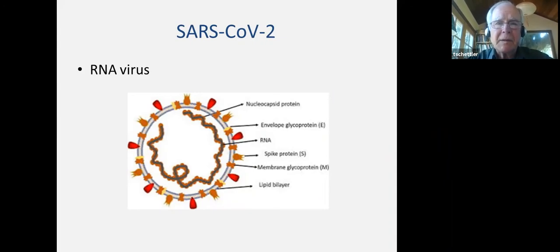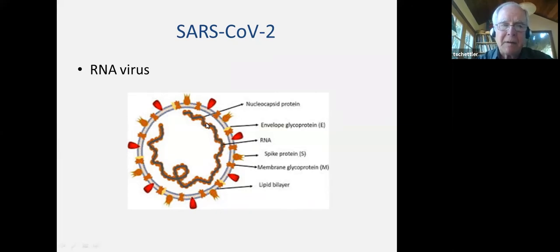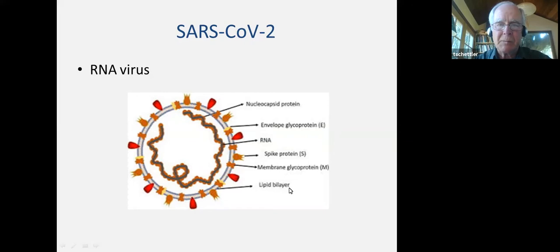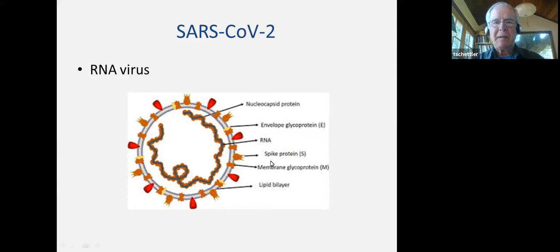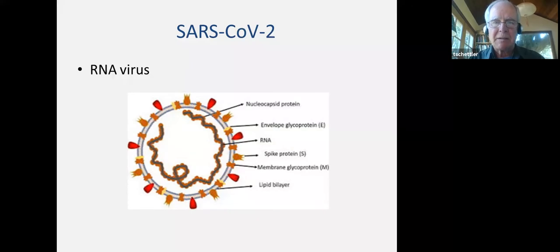SARS-CoV-2 is the name of the virus. It's an RNA virus, and in this graphic depiction here, you'll see a long strand of RNA in the virus, surrounded by a complex capsule. I want to point out the lipid bilayer — it's made out of fat — and that becomes important when we think about the impact of soap and water on this virus. And then the spike protein, which is the mechanism by which this virus is able to enter cells once it gets into our body.